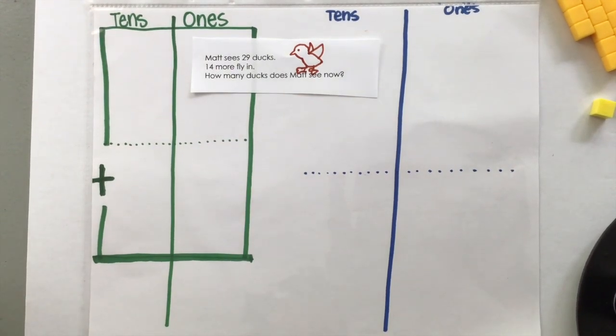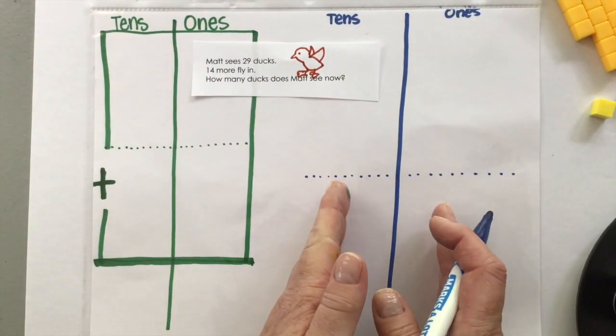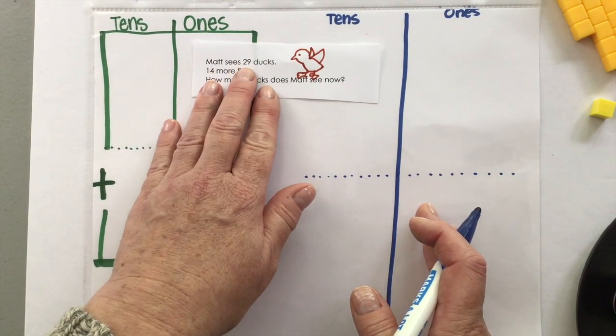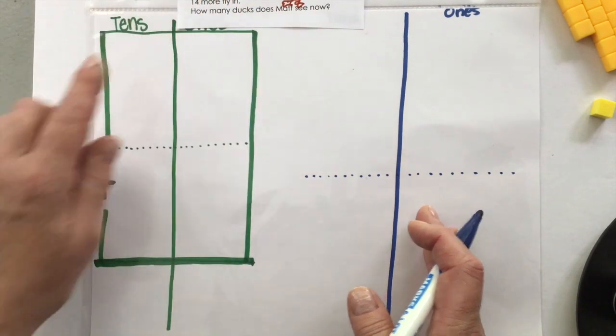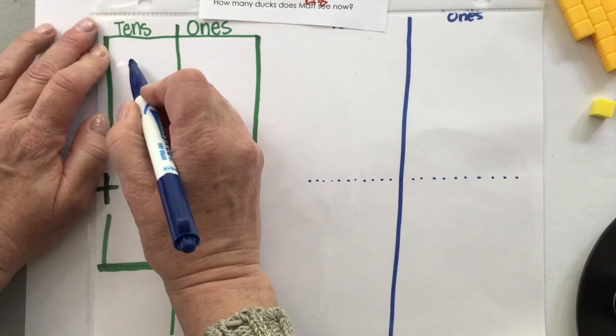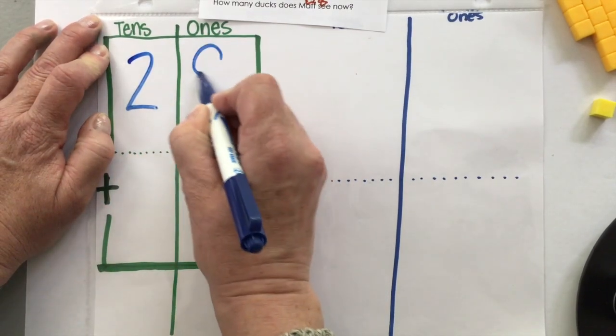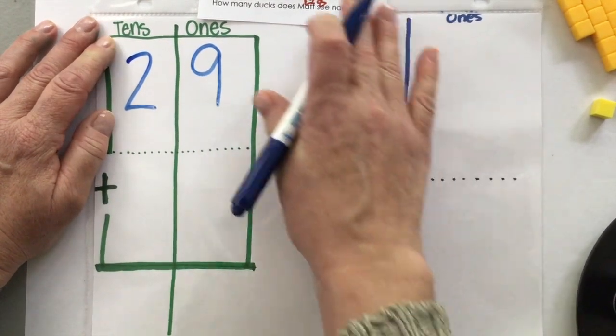Matt sees 29 ducks. 14 more fly in. How many ducks does Matt see now? So we're going to use the build it strategy. Matt sees 29 ducks. So I know 29 is two sets of 10 and nine.